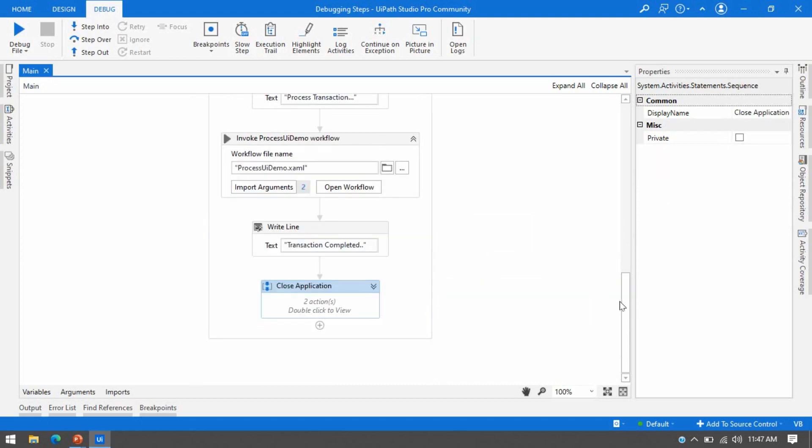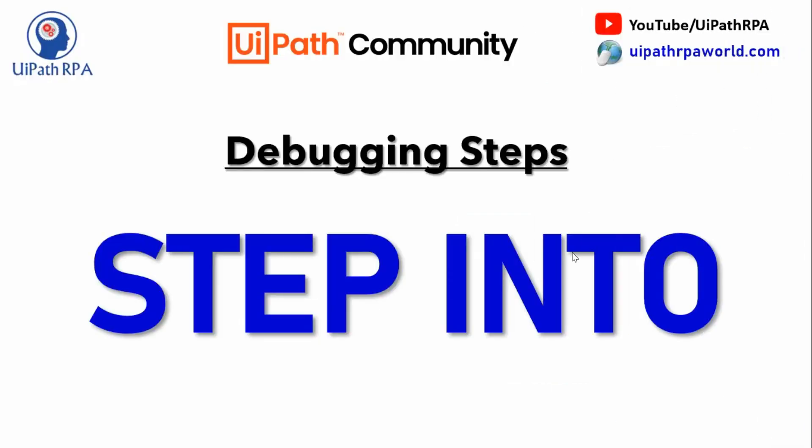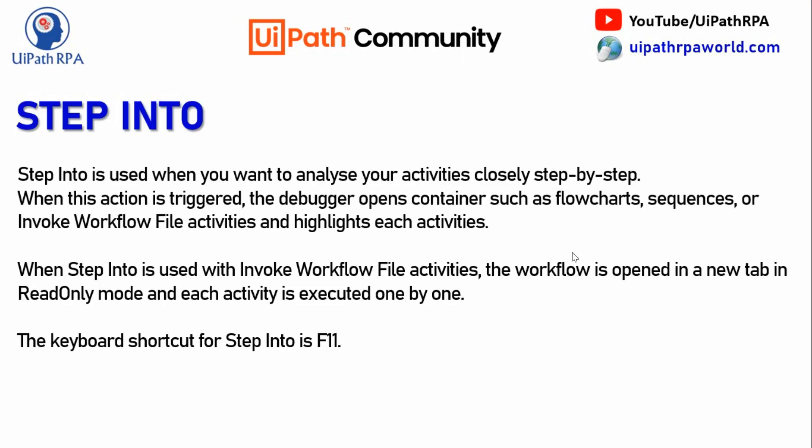Now let me tell you about Step Into. Step Into is used when you want to analyze your activities closely, step by step — one by one. If you want to observe that an activity has an error or is working fine, you can use Step Into. When triggered, the debugger opens the container, which can be an Invoke Workflow File activity, flowcharts, sequences, and it will highlight each activity one by one.